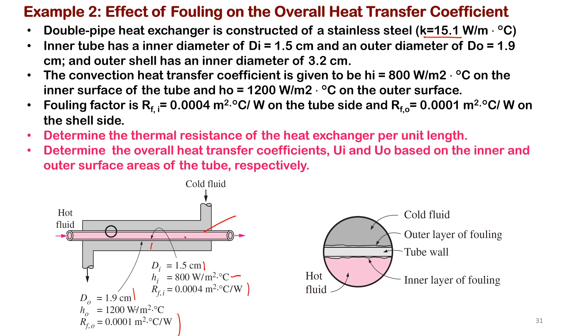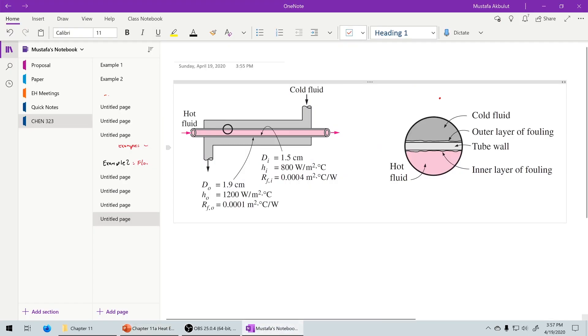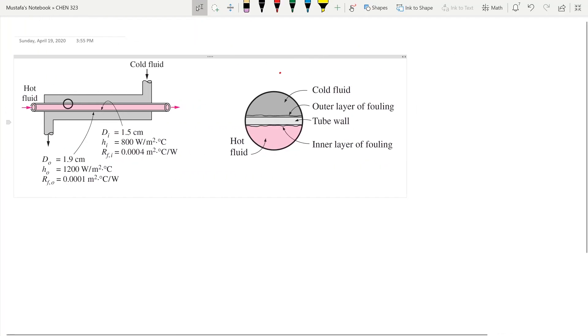First question is to calculate the thermal resistance of the heat exchanger per unit length, which is the inverse of 1 over U. Second, calculate Ui and Uo based on inner and outer surface area. This is just an algebraic example since we already have hi and ho given, so it won't be lengthy. This shows the effect of fouling on U, the overall heat transfer coefficient.